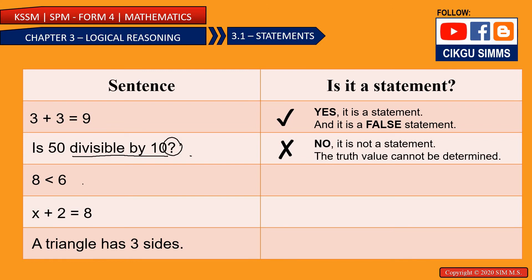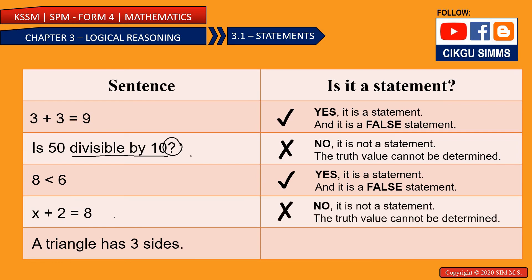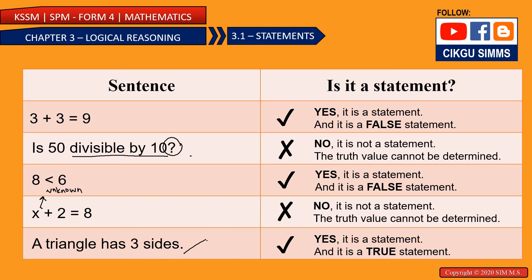Third: '8 is less than 6.' Yes, it is a statement, although it is a false statement. Fourth: 'x plus 2 equals 8.' No, this is not a statement because you don't know whether it is true or false — x is unknown. Fifth: 'A triangle has three sides.' Yes, it is a statement, and it is a true statement.